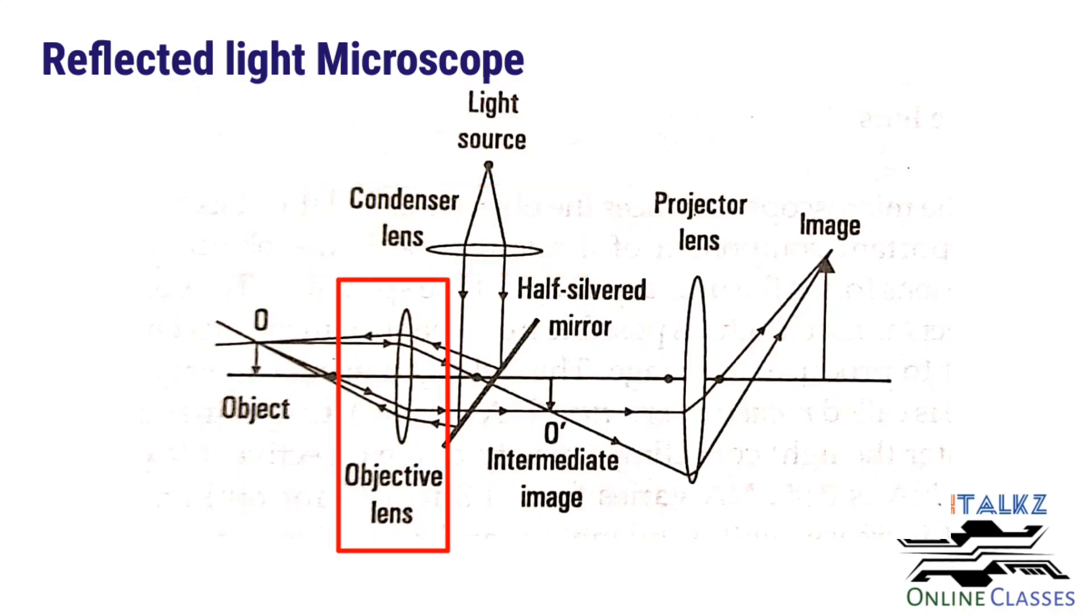The lens that faces the object is called the objective lens. And this is a half-silvered mirror, that is about half of the light striking on the glass will pass through it and the other half is reflected. So these light rays from the condenser lens will be reflected to the objective lens, and these rays will be focused to the specimen.